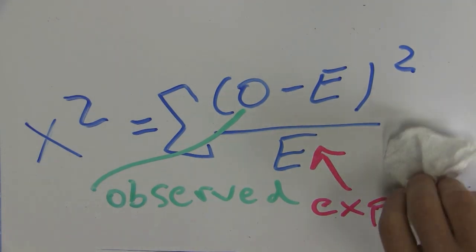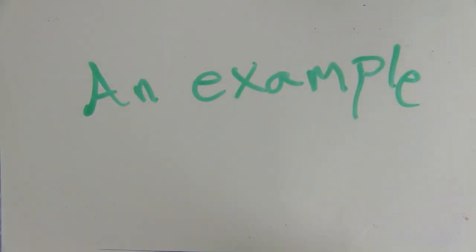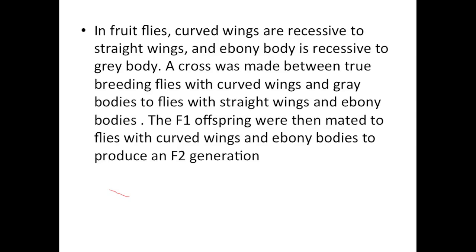So I think we're ready to try an example now where we're going to apply the chi-square formula. In this example, in fruit flies, curved wings are recessive to straight wings, and ebony body is recessive to gray body. A cross was made between true breeding flies with curved wings and gray bodies, and flies with straight wings and ebony bodies. The F1 offspring were then mated to flies with curved wings and ebony bodies to produce an F2 generation.